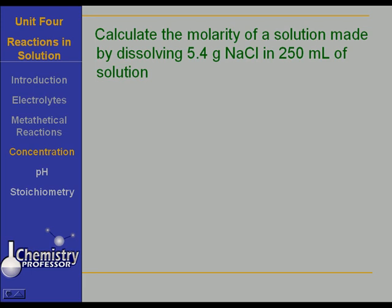Here's a problem. Let's calculate the molarity of a solution made by dissolving 5.4 grams of sodium chloride in 250 milliliters of solution. Notice we were very careful to say 250 milliliters of solution. What we do is put in 5.4 grams of sodium chloride and add some water to it in the volumetric flask. We dissolve the sodium chloride and then add enough water to bring the bottom of the meniscus exactly onto the fill line so that we have 250 milliliters of solution.